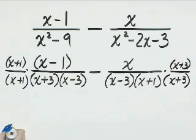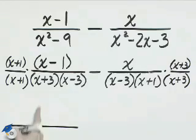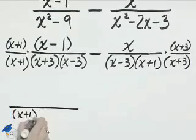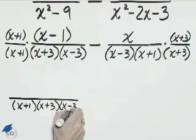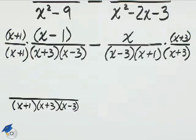Our denominator now is x plus 1, x plus 3, x minus 3, and the numerator is the product of x plus 1 and x minus 1.